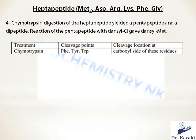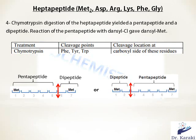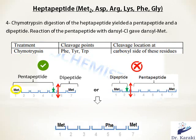The chymotrypsin digestion yielded a pentapeptide (five amino acids) and a dipeptide (two amino acids). There are two possibilities for where chymotrypsin cuts after phenylalanine — phenylalanine could be the fifth or the second amino acid. However, treating the pentapeptide with dansyl chloride gave dansyl-methionine, and since dansyl chloride identifies the N-terminal amino acid, the first amino acid in the pentapeptide is methionine. Therefore, the correct possibility is the first one: phenylalanine is the fifth amino acid in this heptapeptide.